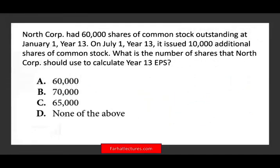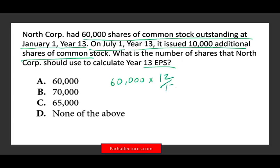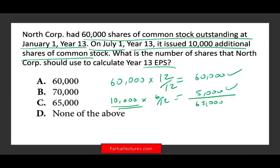Let's take a look at another question. North Corp had 60,000 shares of common stock outstanding as of January 1st, Year 13. On July 1st, Year 13, it issued 10,000 additional shares. What is the weighted average number of shares for EPS? Method one: the original 60,000 shares were outstanding 12/12 of the year, equaling 60,000. The 10,000 new shares issued July 1st were outstanding for July, August, September, October, November, and December — six months — so 10,000 times 6/12 equals 5,000.